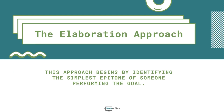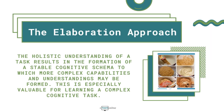In comparison to the stepwise approach, the elaboration approach to goal analysis begins by identifying the simplest epitome of someone performing the goal. It's also referred to as the whole task or simply as the task. After identifying the simplest epitome of the whole task, the analysis progresses through more complex examples of the goal being performed — in other words, it elaborates on the goal or whole task. Take, for example, someone preparing a spaghetti dinner.